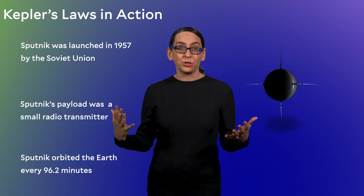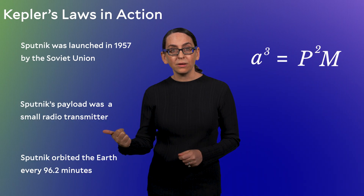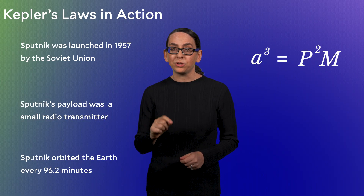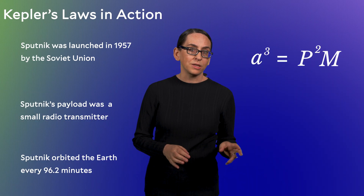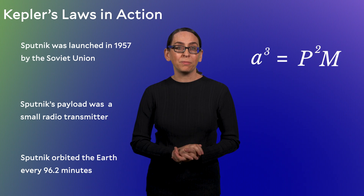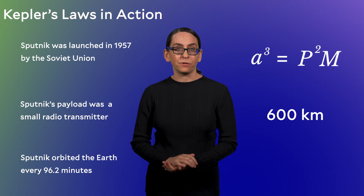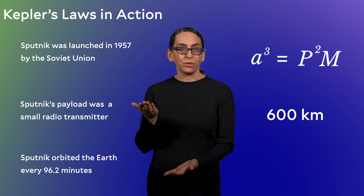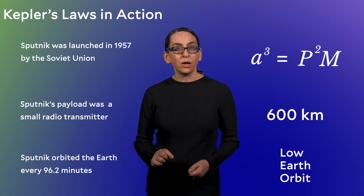Looking at Kepler's equation, we have measured P — the orbital period — and we know M — the mass of the Earth. It's just a matter of working through the equation to get the semi-major axis A. We need to make sure the units are right and include some constants, and an optional deeper dive into this calculation is available at the end of the module. Trusting the math, this equation tells us that Sputnik orbited 600 kilometers above the Earth's surface. We just figured out, by measuring the orbital period, how high the satellite is above the Earth. Going back to the definitions from last segment, an orbital height of 600 kilometers puts Sputnik in a low Earth orbit.